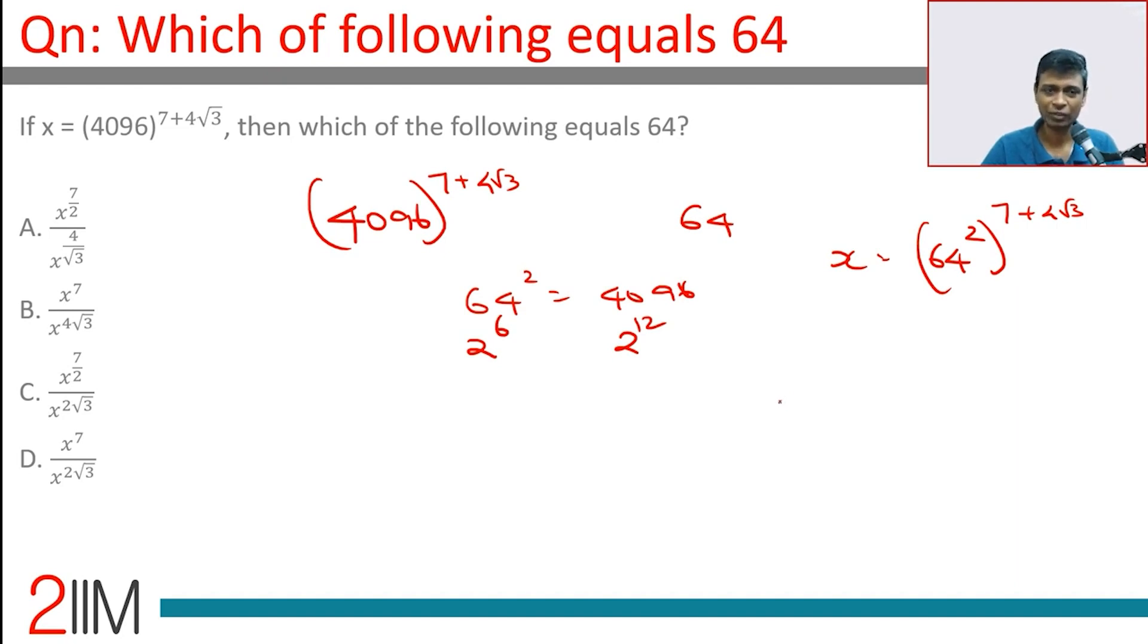Fine. Second thing, which of the following equals 64? So we still don't know how to get to 64 from here, and so we can say square root of x is 64 to the power 7 plus 4 root 3, or square root of x to the power 1 by 7 plus 4 root 3 is 64.